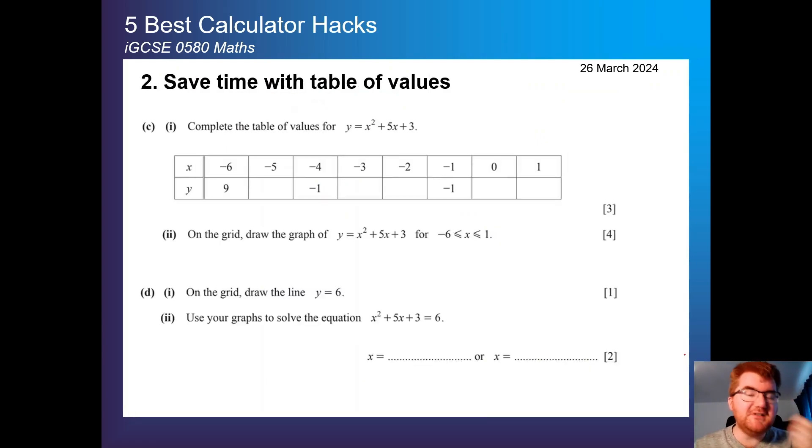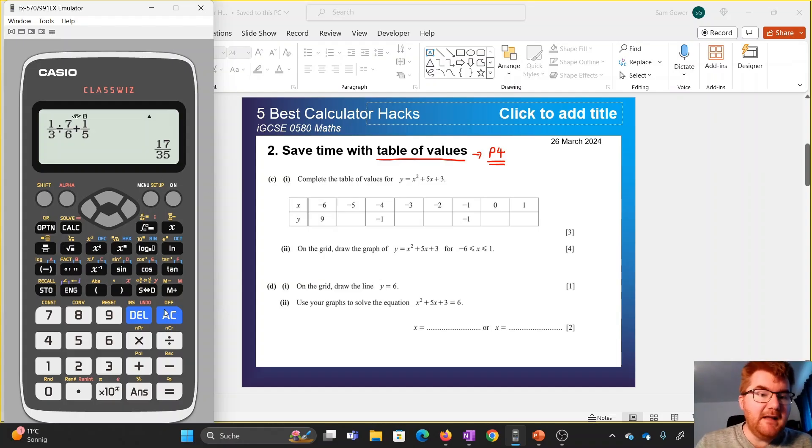Number 2 is saving yourself time with these table of values questions, particularly on paper 4. I'm sure you've practiced this in class where they give you complete the table of values for a particular function. You can speed this process up a lot by using the table function. If you go to our calculator, go to the normal menu, you need to be familiar with this particular menu. We go down to number 9, so number 9 is table.